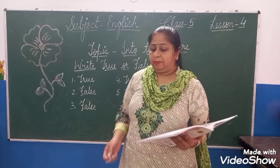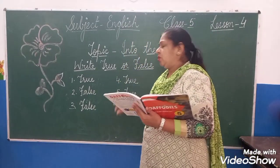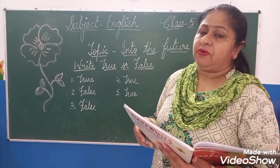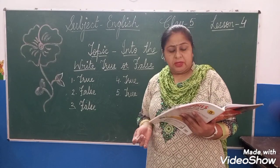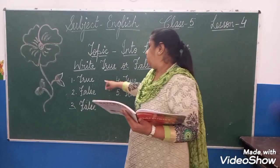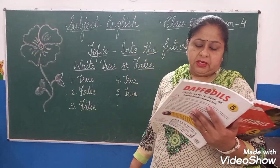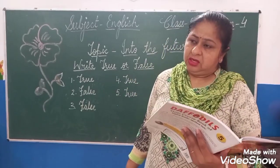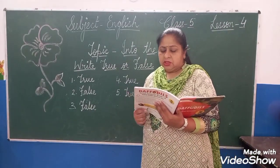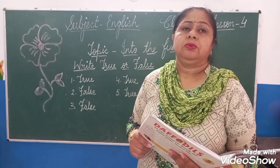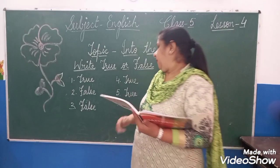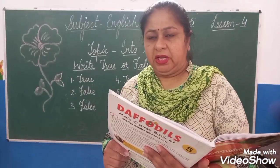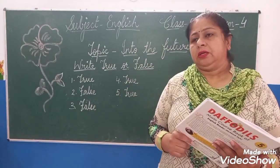Now the next topic is True or False. You have to write true or false in the given box. Number 1: The narrator and his friends gathered for a celebration in the workshop — True. Number 2: When the narrator sat in the chair for the first test flight, it was half past 9 — No, it's false. Number 3: The machine could take people in the past only — No, it's false.